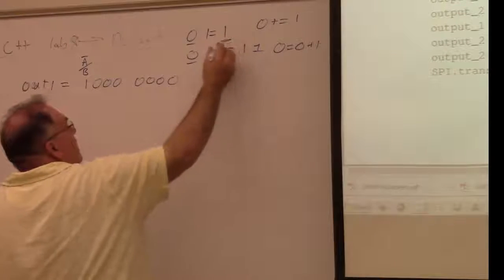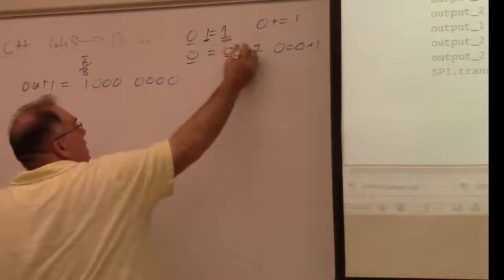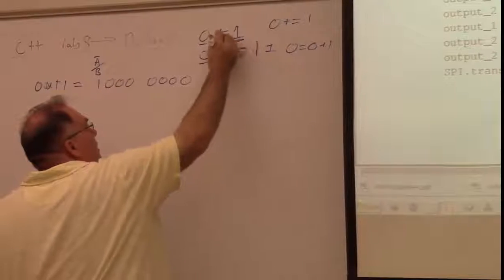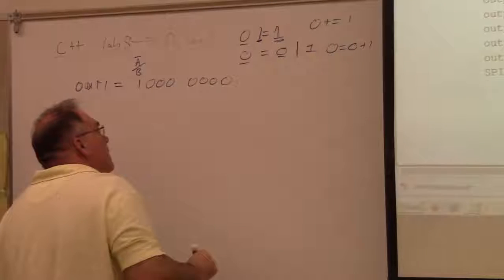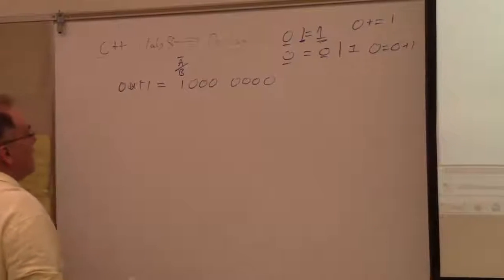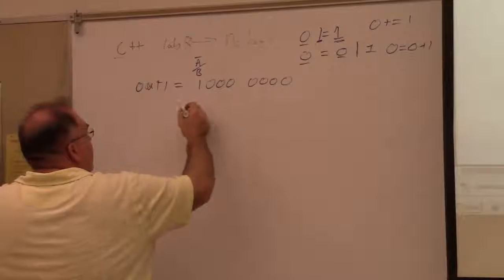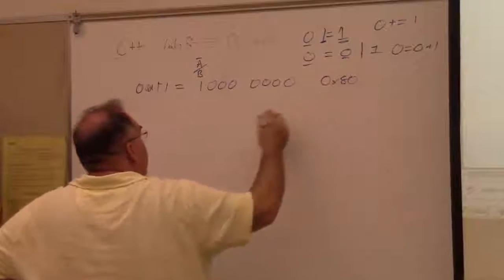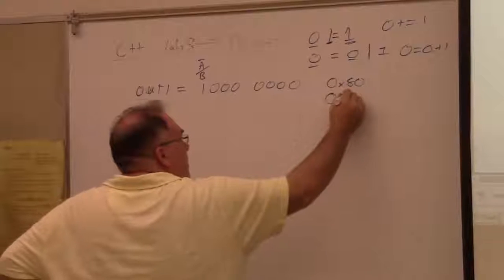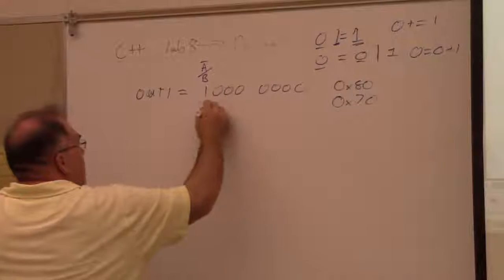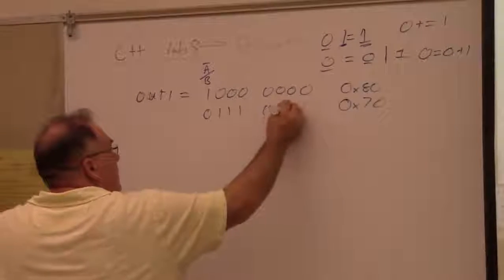And this is the pipe character, the bitwise or. So what we're saying is take the value and or it with 70. So this is 80 up here and we're going to or it with 70. And 70 is zero, one, one, one, zero, zero, zero, zero.